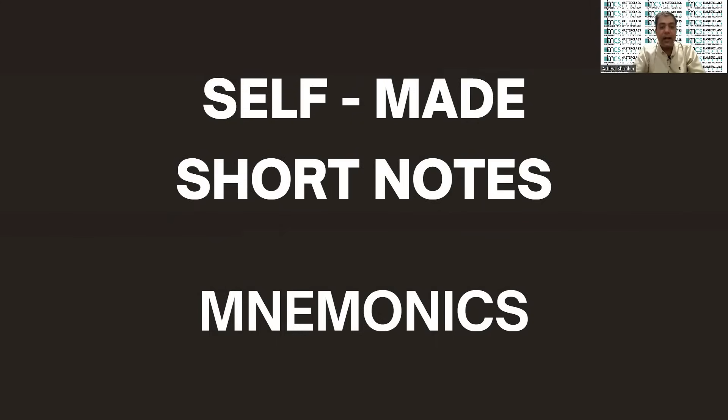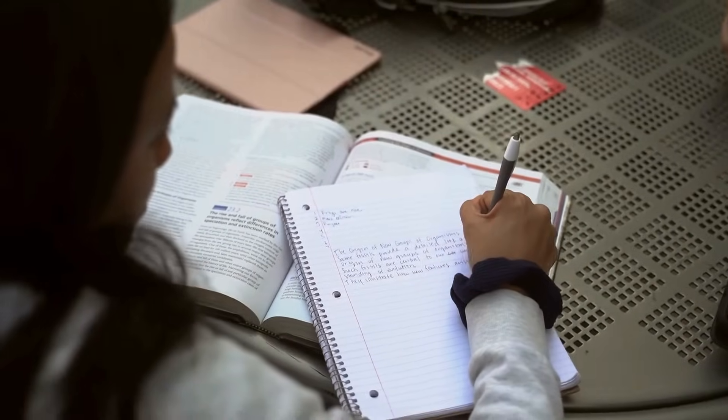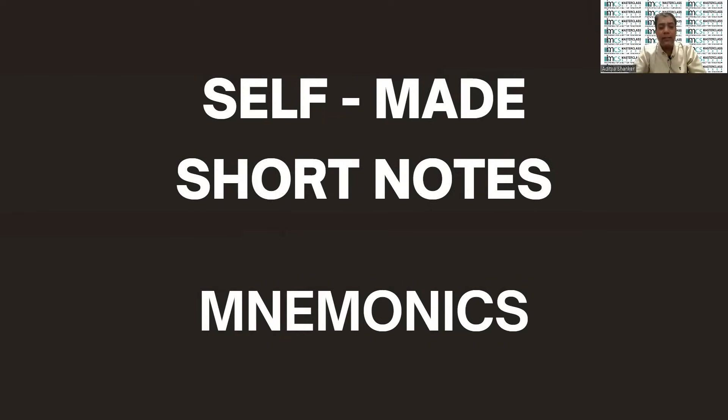That means nitrene and carbene, these are intermediates of CAR reactions. What is CAR? Curtius, Arndt-Eistert, Reimer-Tiemann. Now Curtius, in Curtius nitrene is the intermediate. In Arndt-Eistert and in Reimer-Tiemann, carbene is the intermediate. So if you can make these type of small mnemonics, they are going to be very helpful to you in memorizing the name reactions and of course the intermediates. Hopefully you will get much benefited by the example which I gave right now.